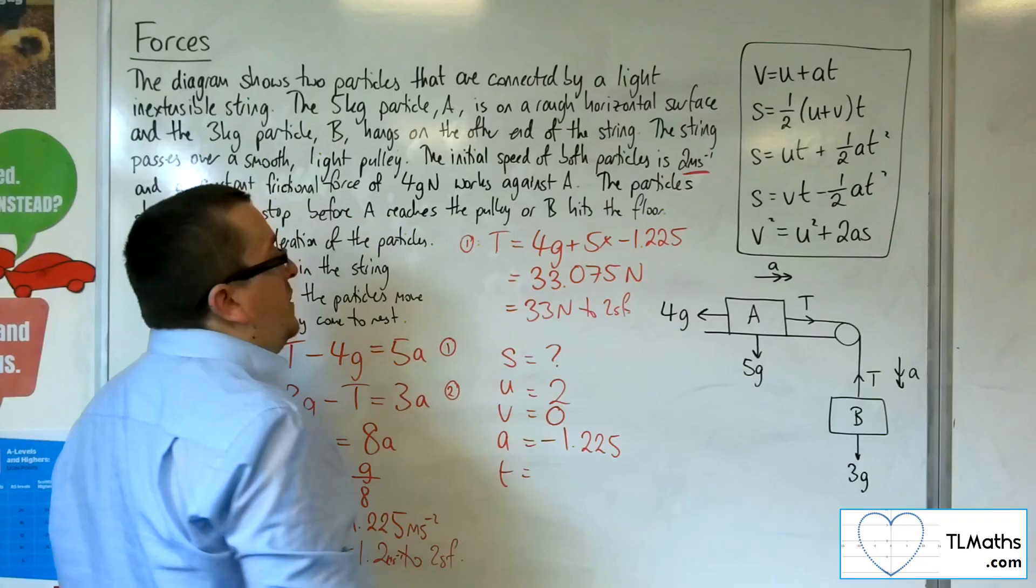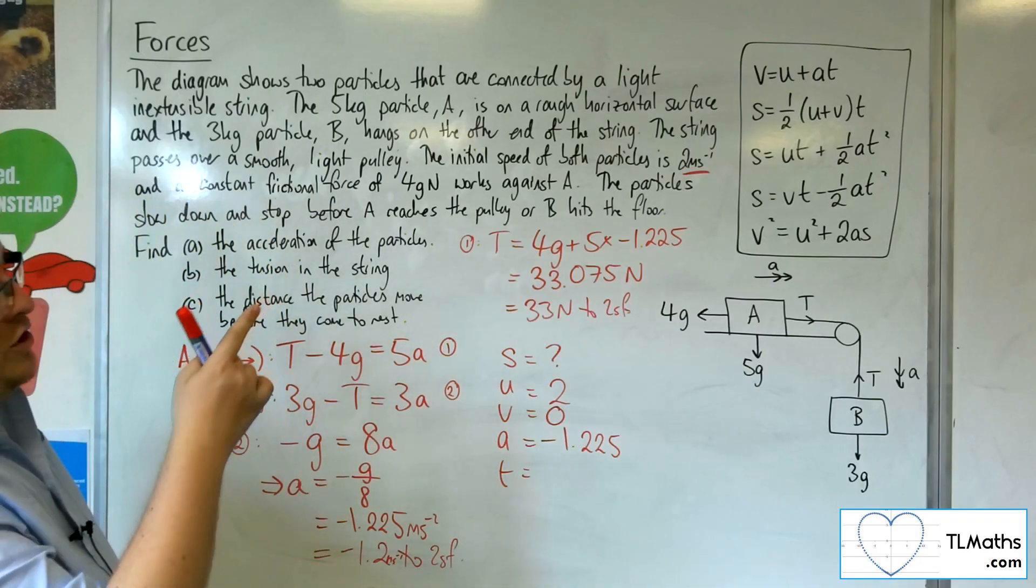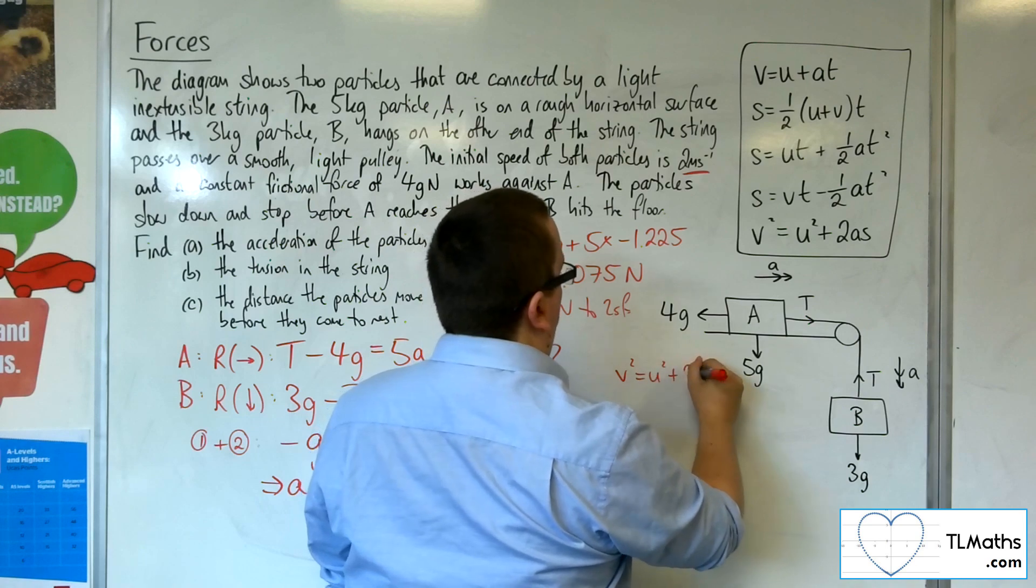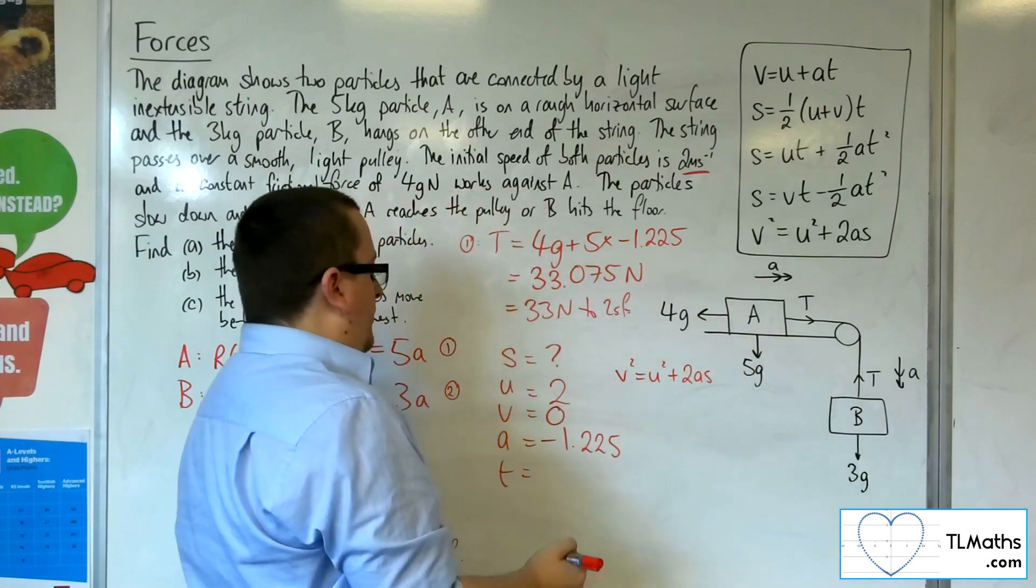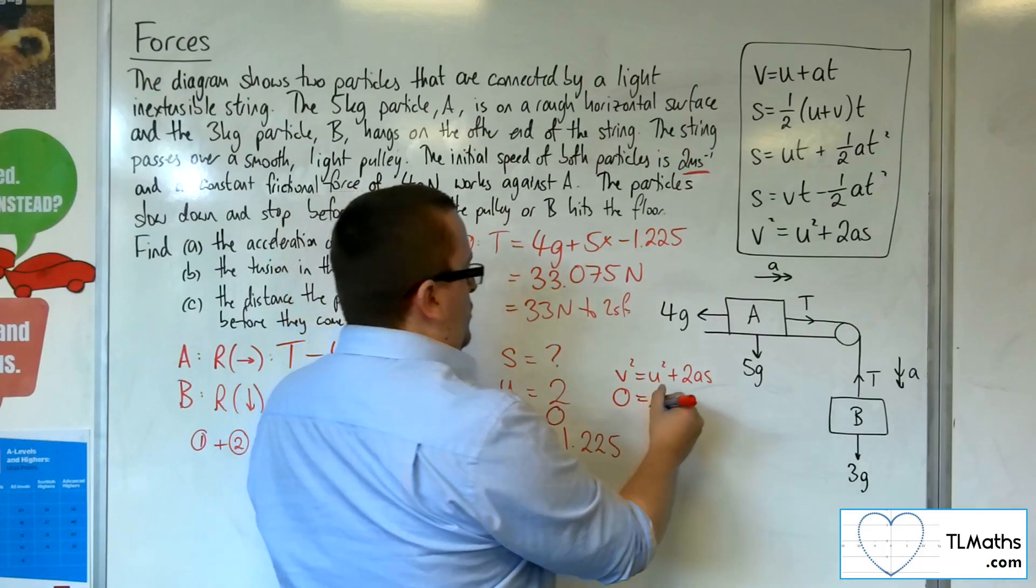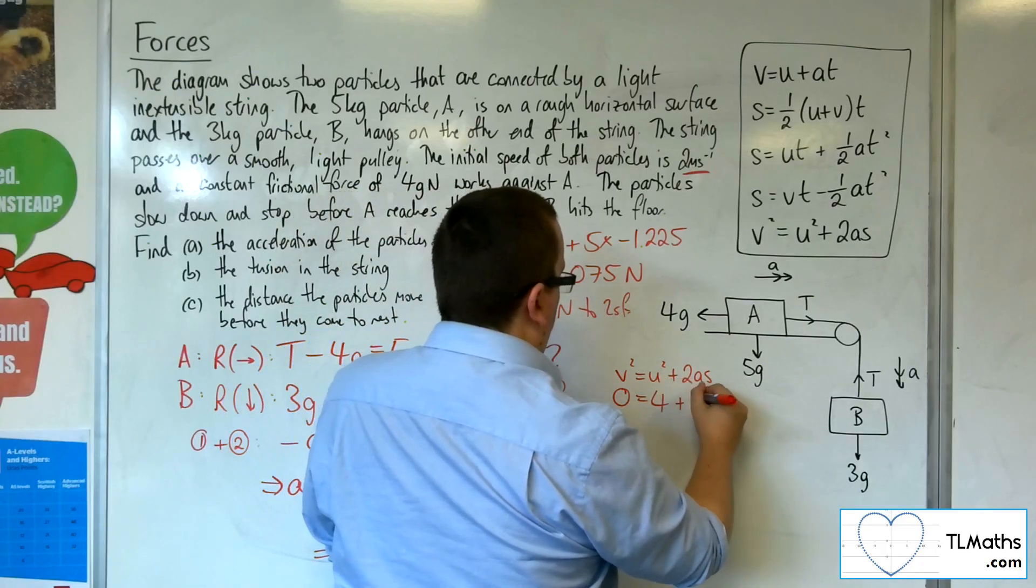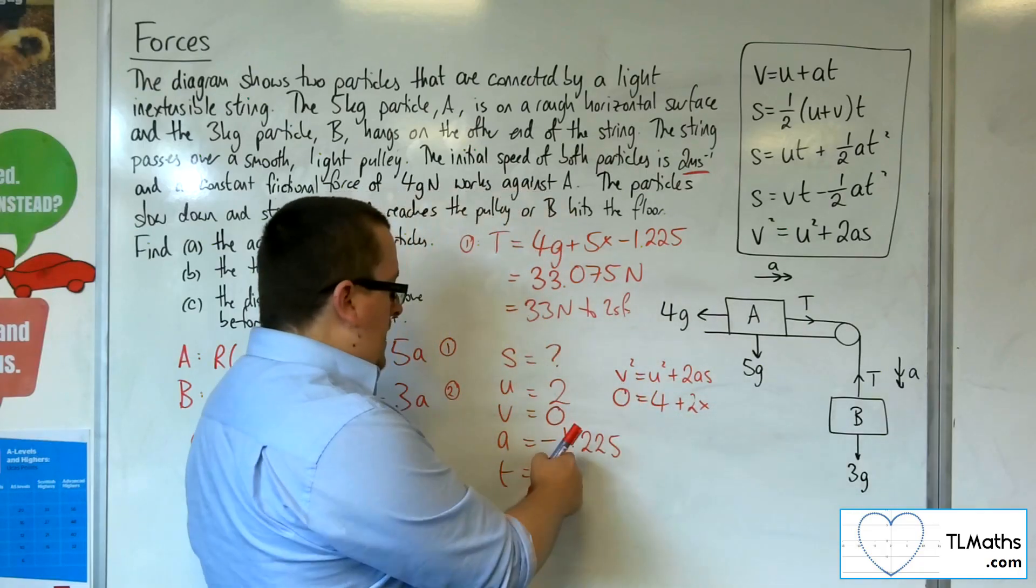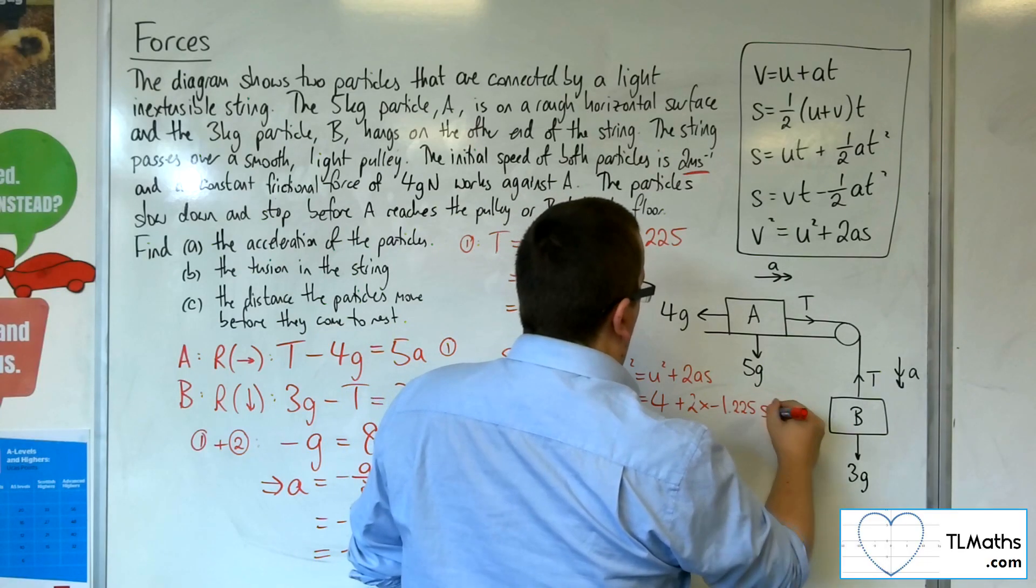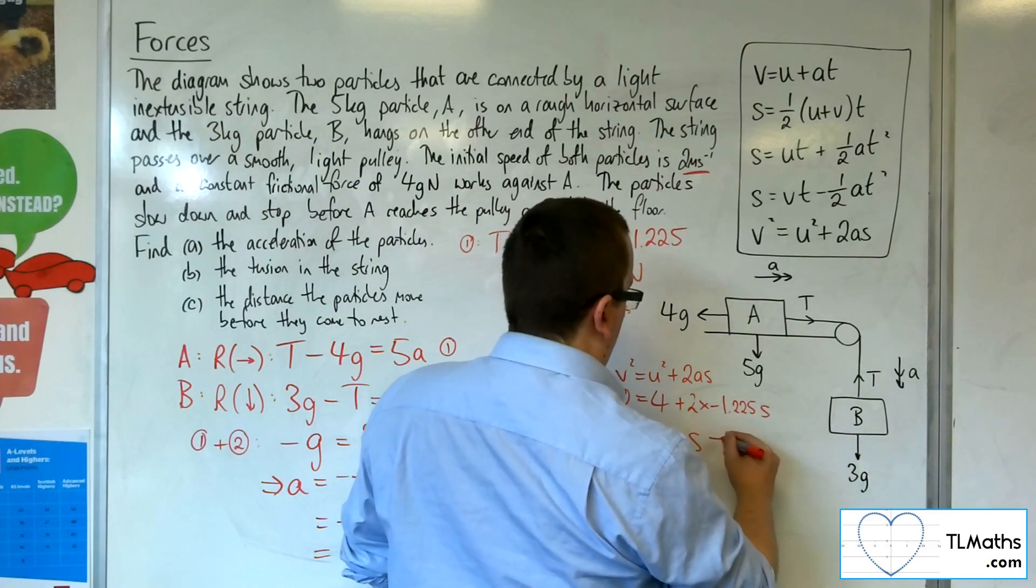So I want the equation that doesn't have T, which is the last one. So we've got V squared is U squared plus 2AS. So V squared is 0 squared. So 0 is equal to U squared, which is 4, plus 2 lots of A, which is minus 1.225, times S.